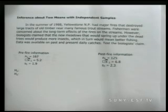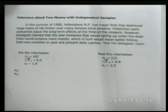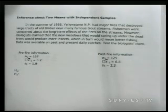One way to approach this problem is to construct a confidence interval — we're going to do this with three easy steps. In the summer of 1988, Yellowstone National Park had major fires that destroyed large tracks of old timber near many famous trout streams. Fishermen were concerned about the long-term effects of the fires on the streams. However, biologists claim that the new meadows that would spring up under the dead trees would produce more insects, which in turn would mean better fishing. Data was available on past and present daily catches, and we'd like to test the biologists' claim.